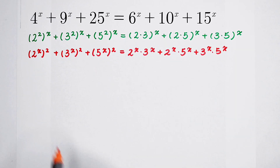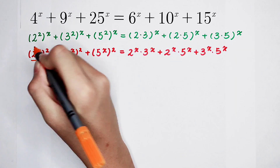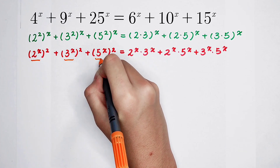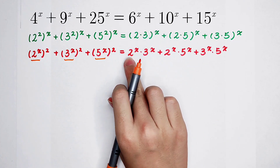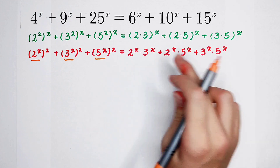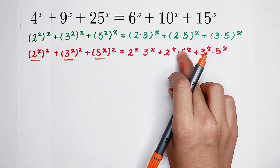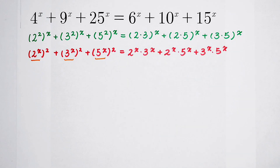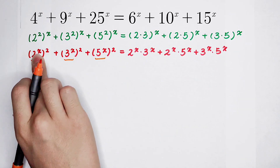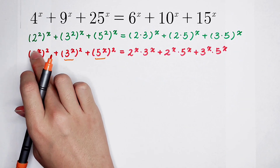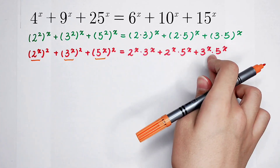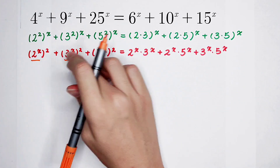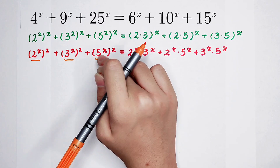For the next step, have you noticed that 2^x, 3^x, and 5^x each appear on both sides? We can see there are terms involving 2^x, 3^x, and 5^x repeated throughout. So we have noticed that each of 2^x, 3^x, and 5^x appears multiple times in this equation.